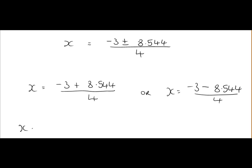So that means x is equal to 5.544 divided by 4, which is equal to 1.386, or x is equal to minus 11.544 all over 4, which is equal to minus 2.886. So that's our two answers for x. x is 1.386, or x is minus 2.886. And that's our sum completed.